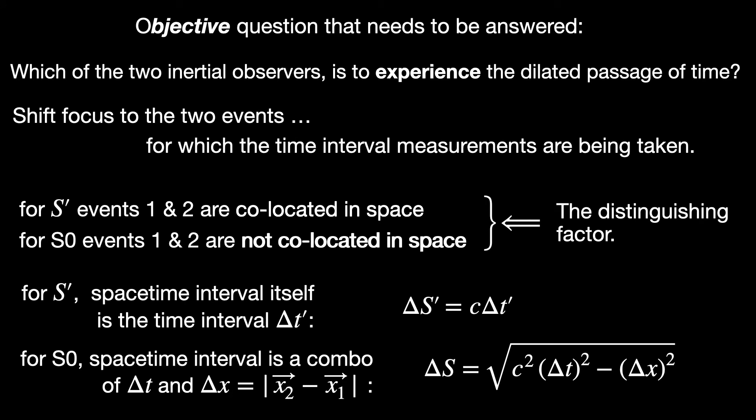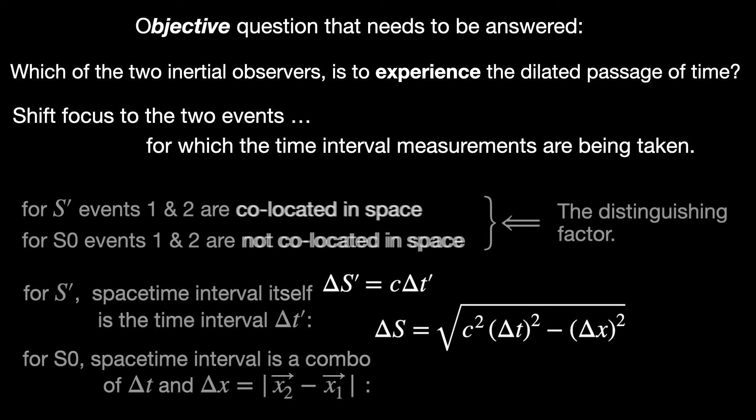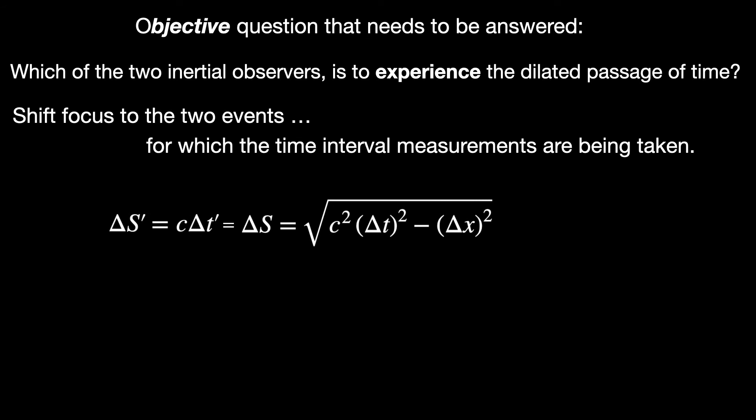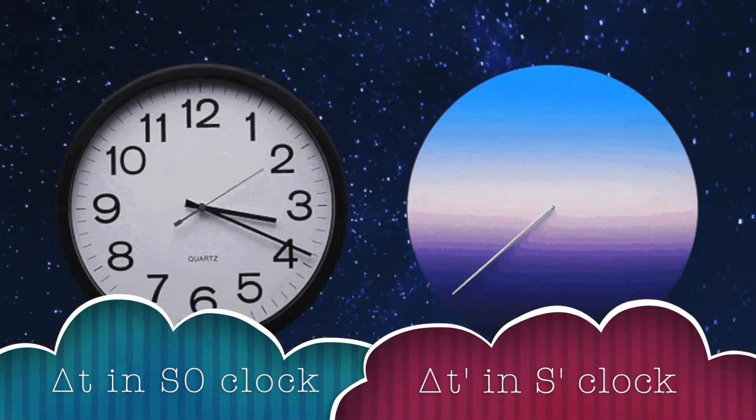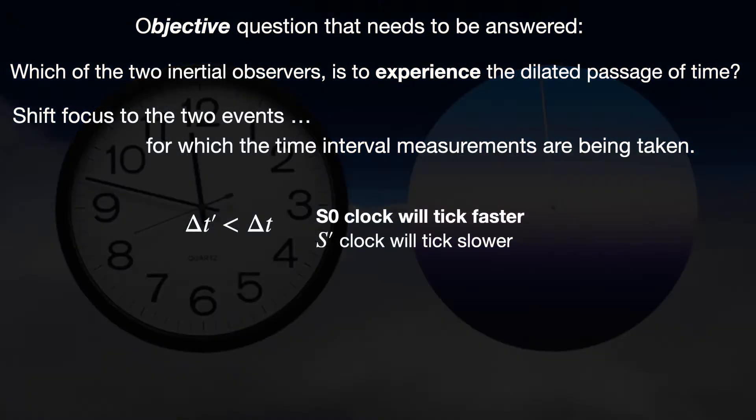Now, the space-time interval measured in S0 and S' that is delta S and delta S' has to match. Why they must match is explained in the video I just told you about. If the space-time interval has to match then delta T' must be smaller than delta T. Hence, S' will experience shorter passage of time and we in S0 will experience longer passage of time between events 1 and 2. So, our clock will indeed tick faster and the clock in S' will tick slower in connection with these two events.